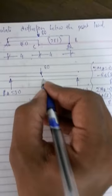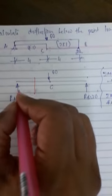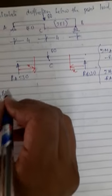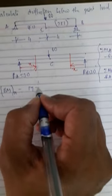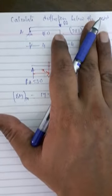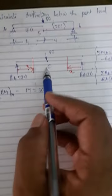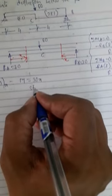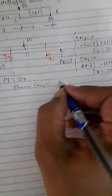I need to find deflection at point C, which is below the point load. For this, I take two sections — one section from A to point C, another from B to point C — with unknown distance x. The bending moment at any distance x is given by M equals 30 into x. For section AC, bending moment is 30x; for section BC, it is also 30x.